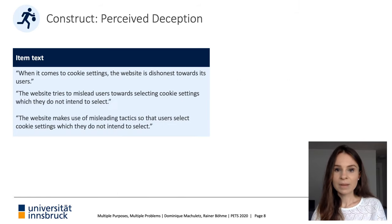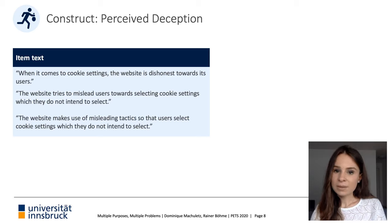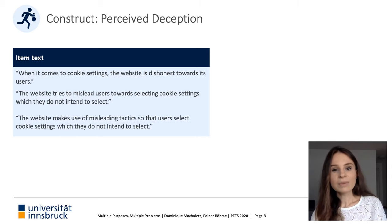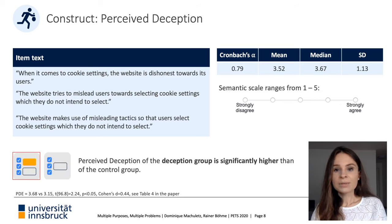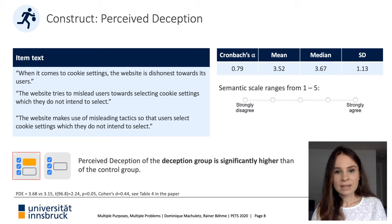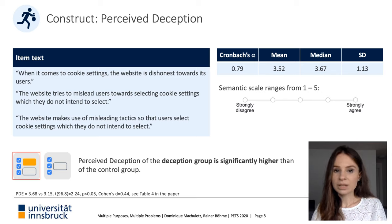One of the four constructs measured in the exit questionnaire was perceived deception. The items asked users to state if they think the website was dishonest about cookie settings, if it tried to mislead the user towards selecting settings they did not intend to, and if the website made use of misleading tactics — all assessed on a semantic scale from 1 to 5. We find that perceived deception in the group with the deceptive button is significantly higher than in the control group, establishing users' negative attitudes towards this deceptive feature and closing the gap between observed behavior and potential legal interpretations.